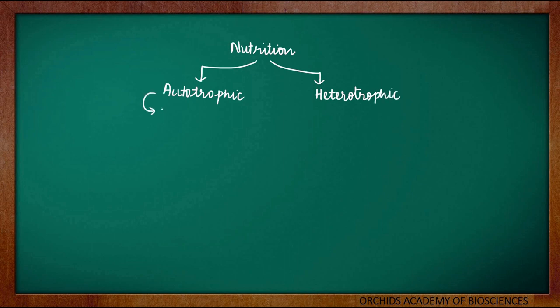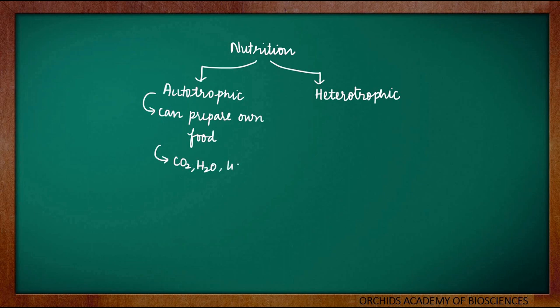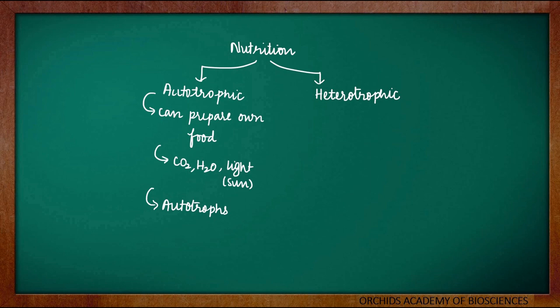In autotrophic mode of nutrition, the organism can prepare or synthesize its own food. They prepare their own food by using some simple inorganic substances like carbon dioxide and water from the surroundings, and they also use the light energy which comes from the sun. The organisms which prepare their food through autotrophic mode of nutrition are called as autotrophs. Examples include plants and certain autotrophic bacteria.